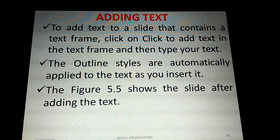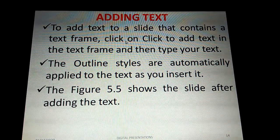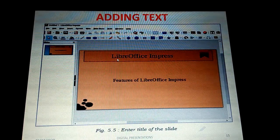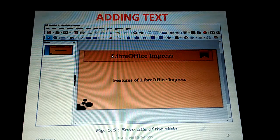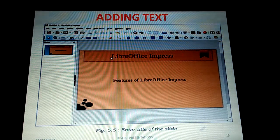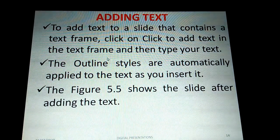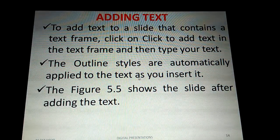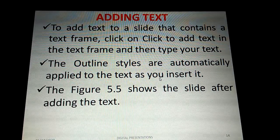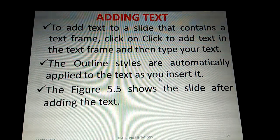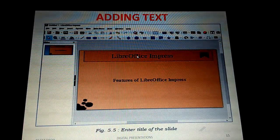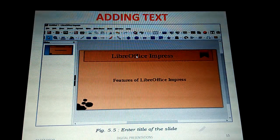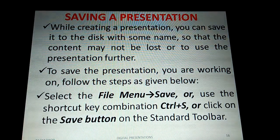To add text to a slide that contains a text frame, click on 'Click to add text' inside the text frame, then type your text. After clicking, a blinking vertical cursor will appear and you can start typing. Outline styles are automatically applied to the text as you insert it. For example, you can type 'LibreOffice Impress' and 'Features of LibreOffice Impress.'